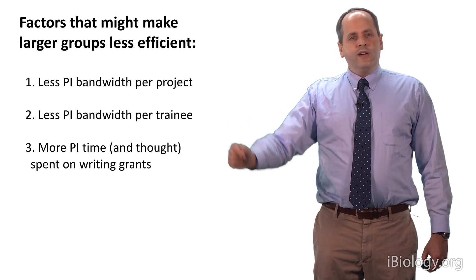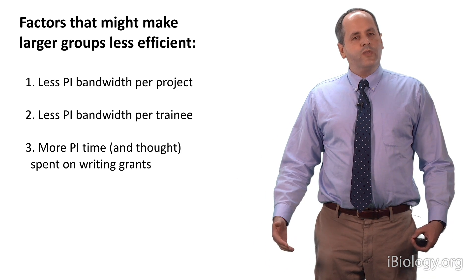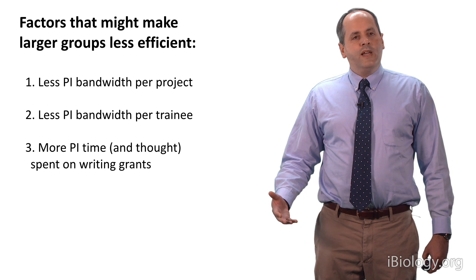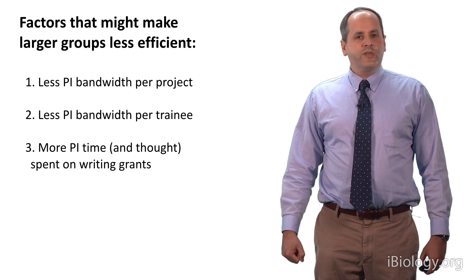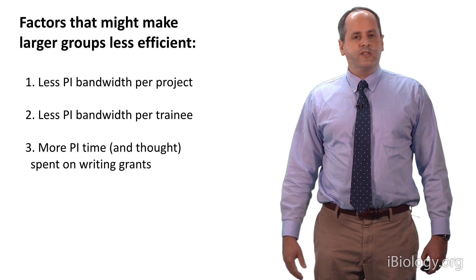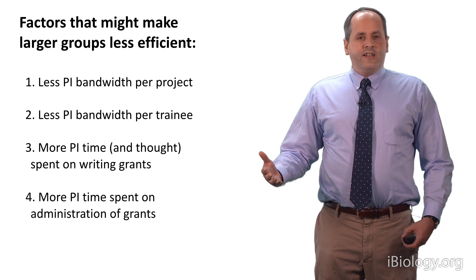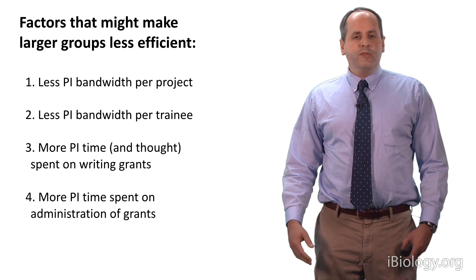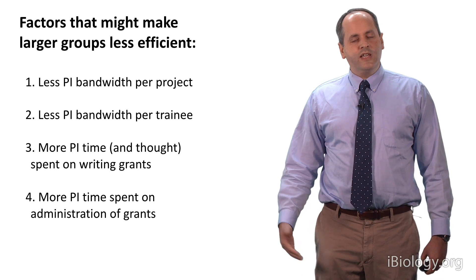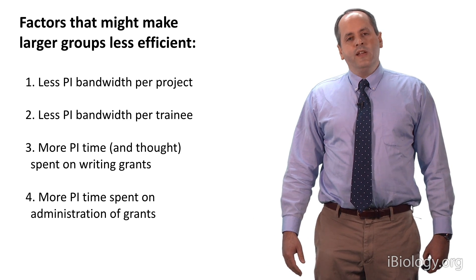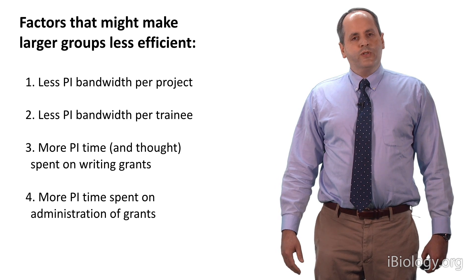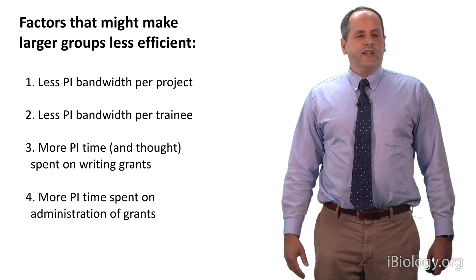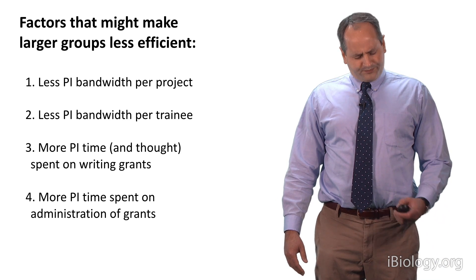Furthermore, as labs get bigger, the PI has to spend more time writing grants to keep the lab funded. Bigger labs mean more grants to keep things going. More of the PI's time will be devoted to writing grants rather than actually thinking about research and training and educating the students. Related to that, the more grants you have, the more time the PI has to spend administering those grants, writing progress reports and doing the other kinds of budgetary things required to keep a number of different grants going. These factors led Bruce to conclude, and I certainly have to say I agree with him, that a larger research group would be less efficient and less productive than a smaller research group.